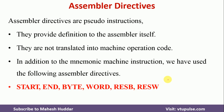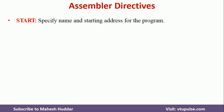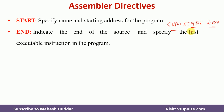Along with machine instructions, there are different assembler directives in system software: START, END, BYTE, WORD, RESW, RESB, and so on. The START directive specifies the name and starting address of the program — for example, 'SUM START 4000' means the program name is SUM and it starts at address 4000. The END directive indicates the end of the source and specifies the first executable instruction, for example 'END 4000'.